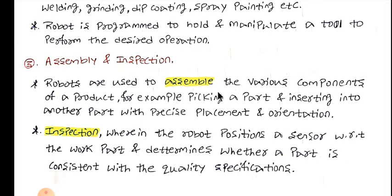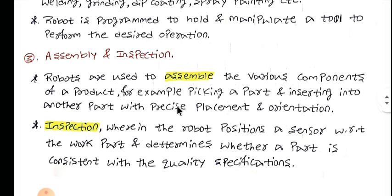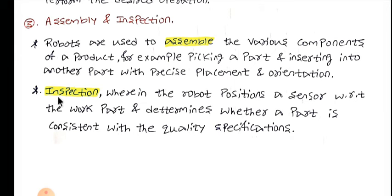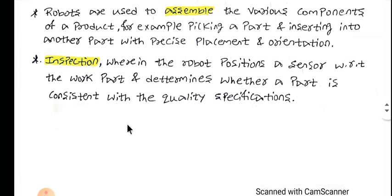The last application category is assembly and inspection. Robots are used to assemble various components of a product — for example, picking up a part and inserting it into another part with precise placement and orientation. Once assembly is done, inspection is performed, where the robot positions a sensor with respect to the work part and determines whether the part is consistent with quality specifications. If it meets the specifications the product is passed, otherwise it is rejected.